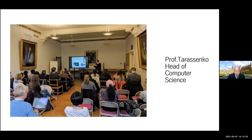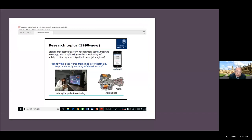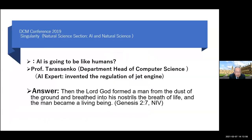Professor Tarasenko is now a leading thinker in the field of AI. He established an AI college at Oxford and is also head of the computer science department. He invented regulation systems for jet engines — that is his most important work — and is now developing medical treatments using AI. I asked Professor Tarasenko after his keynote lecture about the issue of singularity, just as Kurzweil had mentioned — AI is going to be like humans — what do you think about the future of AI?